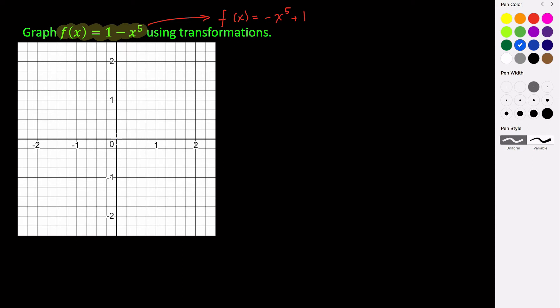...is going to have the points (0, 0), so the origin, (1, 1), and also (-1, -1). And it's going to act like a cubic function, where it's going to start low and then end high. And it's going to be a little bit flatter than a cubic function as you get closer to your origin.